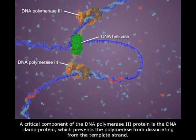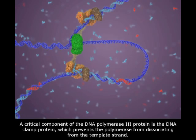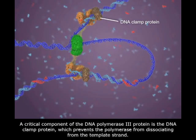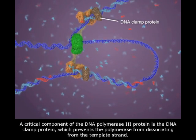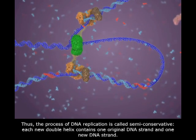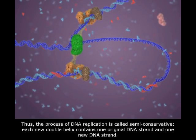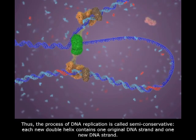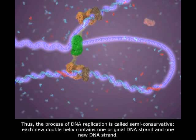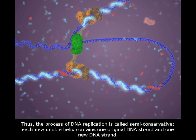A critical component of the DNA polymerase III protein is the DNA clamp protein, which prevents the polymerase from dissociating from the template strand. Thus, the process of DNA replication is called semi-conservative. Each new double helix contains one original DNA strand and one new DNA strand.